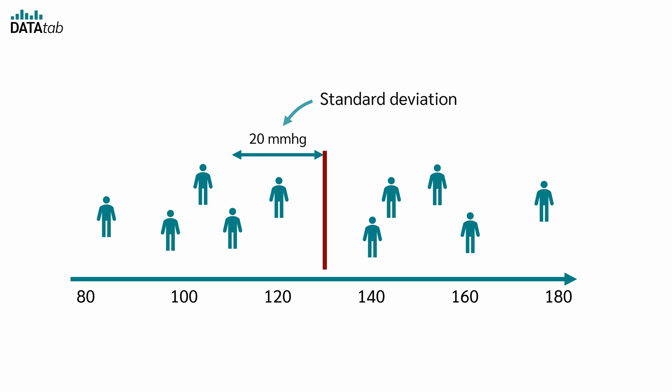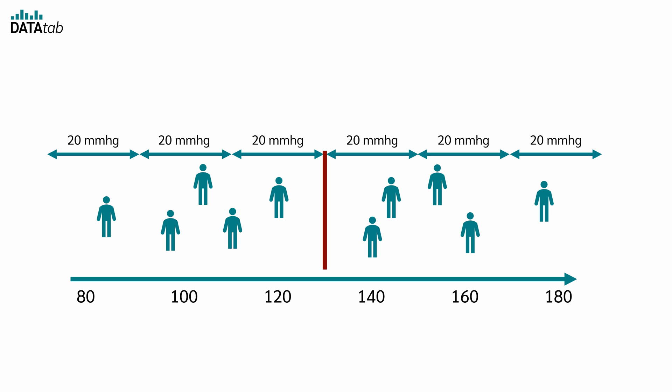Let's say we get a standard deviation of 20 for our data. This means that on average the patients deviate by 20 from the mean value. The z-value now tells us how far a person is from the mean value in units of the standard deviation. So a person who deviates by one standard deviation has a z-value of 1. A person who deviates twice as far from the mean as the average has a z-value of 2. And one that deviates by 3 standard deviations has a z-value of 3.